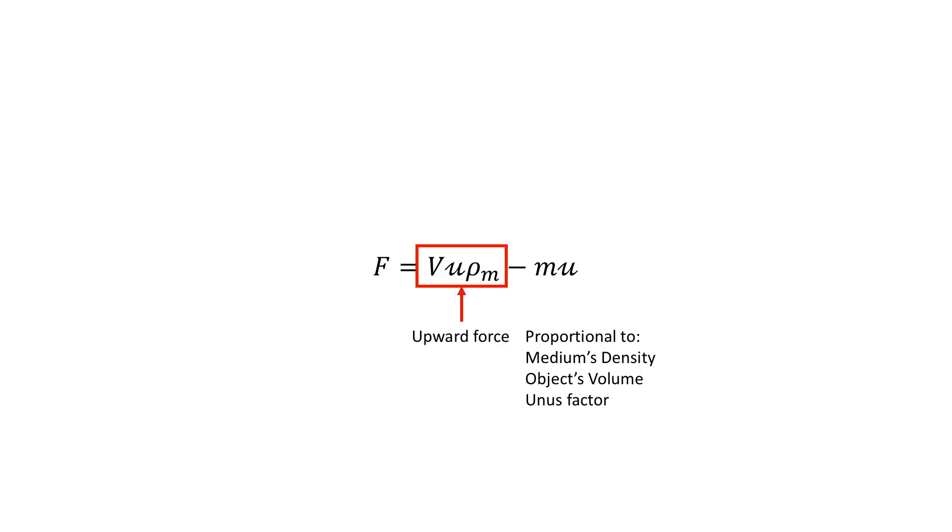This is because this is the equation for the forces acting on a submerged object. We have two terms. One is the upward force, which is proportional to the medium's density, the object's volume, and this unis factor. The second is a downward force, which is proportional to the mass of the object, and this unis factor.